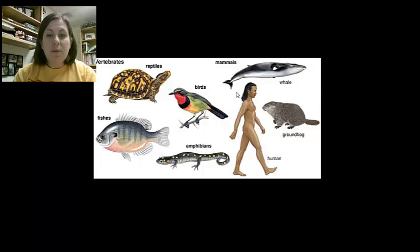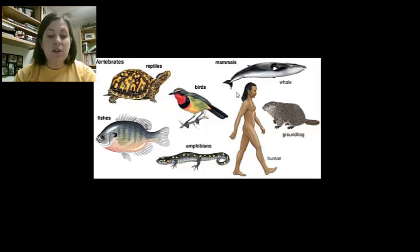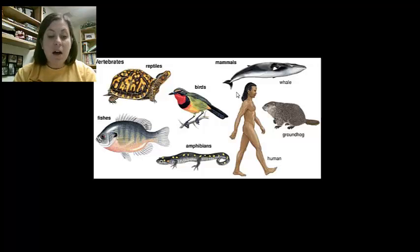Learned behaviors are modified due to life experiences of the individual. Vertebrates demonstrate learned behaviors because they have more developed nervous systems and endocrine systems. They also have a longer lifespan and a period of maternal nurturing, which allows learning to take place.